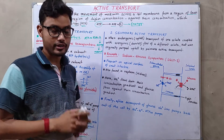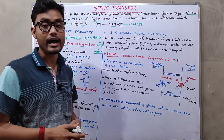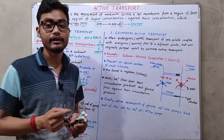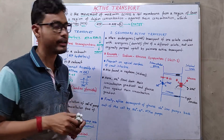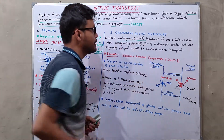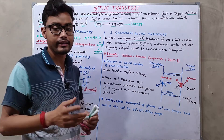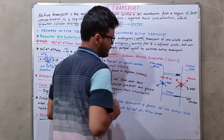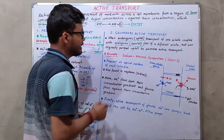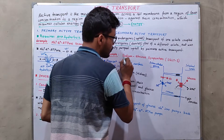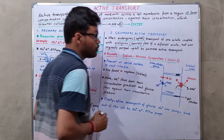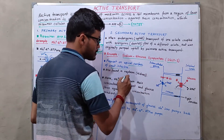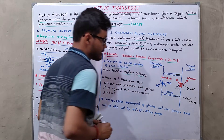In secondary active transport, symporters are used. These symporters transport one molecule against its concentration gradient (endergonic/uphill reaction) along with another molecule down its concentration gradient (exergonic/downhill reaction). One example is the sodium-glucose symporter, SGLT1, which is present on the apical surface of the small intestine and also in the nephron of the kidney.